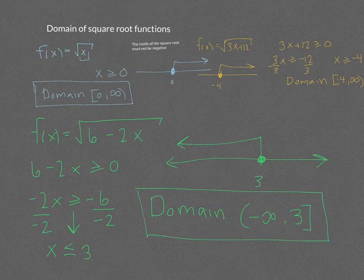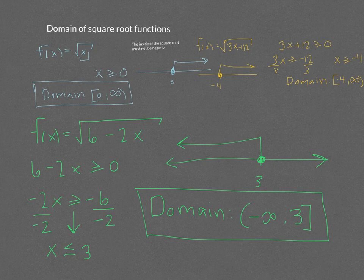If you divide by a negative, make sure you flip the sign — that is the domain of square root functions. Any even root has to have a domain where the inside is positive.